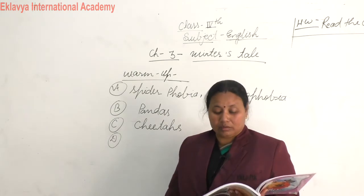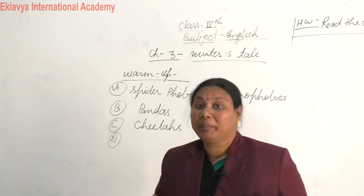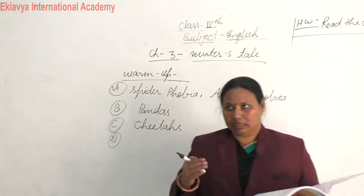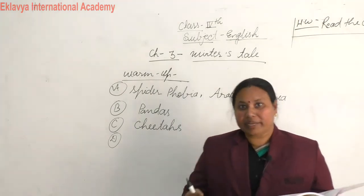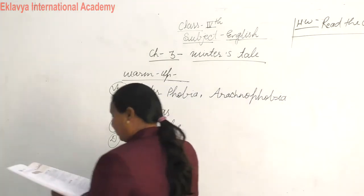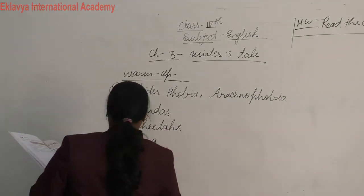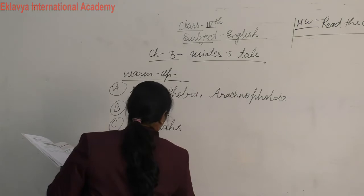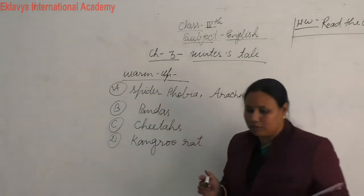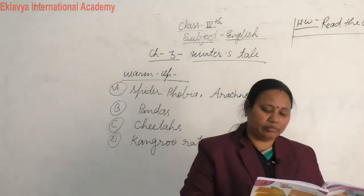This is a kind of rat — ek tarike ka ye chuha hai — jo kabhi bhi paani nahi peeta. I think they live at least 3–4 years — 3–4 saal ka inaka jeevan hota hai — aur ye usmein paani nahi peete. So the answer is kangaroo rat. Have you understood? This is also an interesting question.